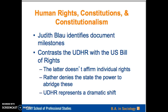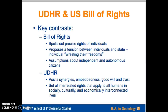The Universal Declaration of Human Rights, by contrast, represents a dramatic shift. The key contrast Blau points out: the Bill of Rights spells out precise rights of individuals. Underlying this is a tension between individuals and the state, and thus the model views the individual as wresting freedoms from the control of a state apparatus. It has assumptions about independent and autonomous citizens. The Universal Declaration of Human Rights, by contrast, posits synergies, embeddedness, goodwill, and trust among communities of individuals, and thus posits a set of interrelated rights that apply to all human beings living in socially, culturally, and economically interconnected settings and situations.